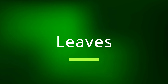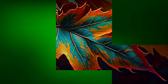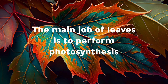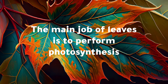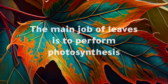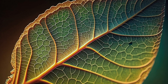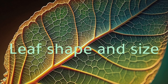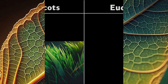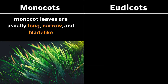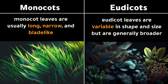The main job of leaves is to perform photosynthesis. Monocot leaves are usually long, narrow, and blade-like — think of blades of grass. Eudicot leaves are variable in shape and size but are generally broader than monocot leaves.